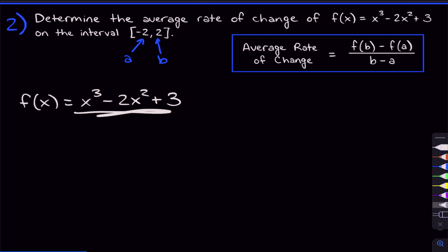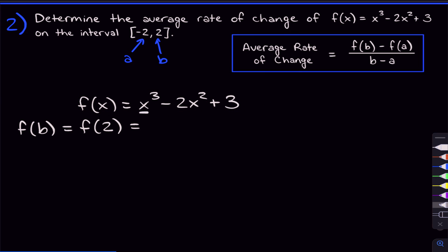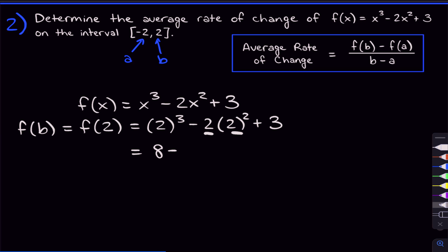The function is x cubed minus two x squared plus three. To find f(b), b is two, so we plug two in everywhere we see an x: two cubed minus two times two squared plus three. Two cubed is eight. Two squared is four, times two is eight, so minus eight. Eight minus eight is zero, plus three is three. So f(b) equals three.